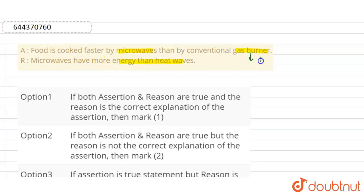We also know that the heat lost by the gas burner is more. Heat lost by the conventional gas burner is more than the microwave. So we can say that food is cooked faster by microwaves than by conventional gas burner.